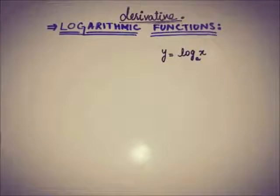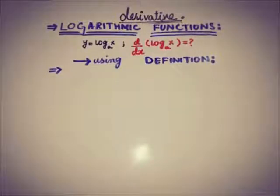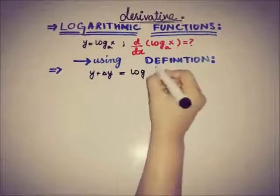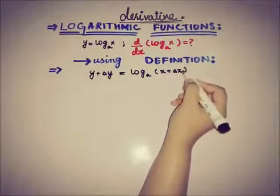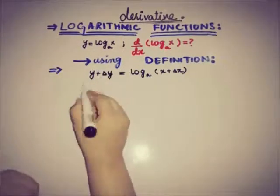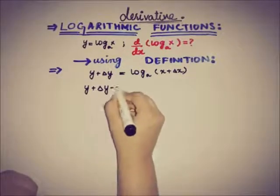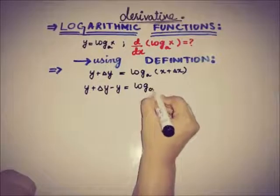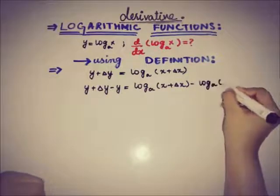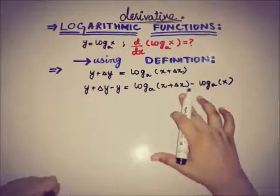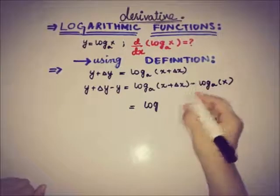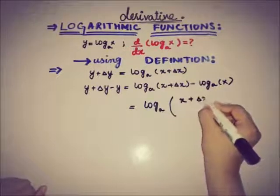We will use the definition of derivative for this. So the very first step is adding change on both sides. So y plus delta y is equal to log of x plus delta x with base a. Now we will find the difference of these terms, and we will get y plus delta y minus y equals log base a of x plus delta x minus log of x with base a. We will use the properties of logarithmic functions here to write x plus delta x by x.